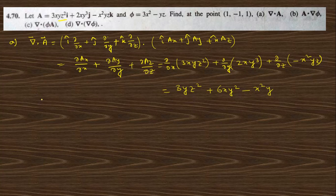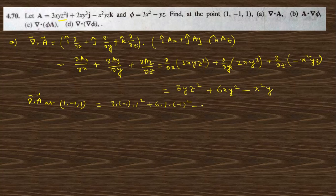At the point (1, −1, 1), divergence of A equals 3(−1)(1)² + 6(1)(−1)² − (1)²(−1), which gives −3 + 6 + 1 = 4.